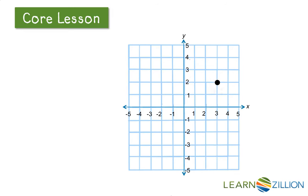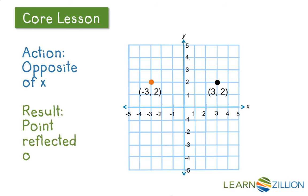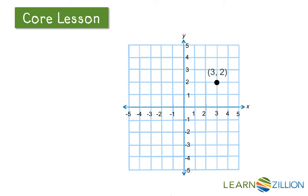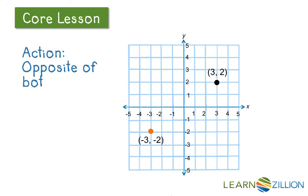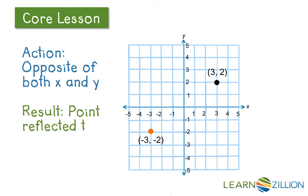So let's start with the same point in quadrant 1, but this time let's change the x coordinate to negative. Now it's going to be reflected over the y axis. What happens if we take the opposite of both the x and y coordinate, or change them both to negative? The point will be reflected to the opposite quadrant.